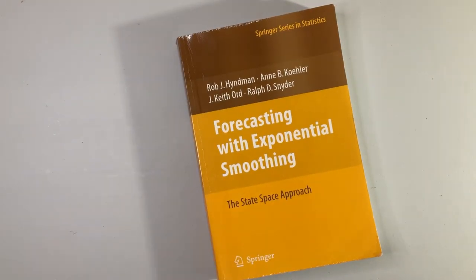Forecasting with Exponential Smoothing is a book focused on a niche topic. I picked up this book because I like Rob Hyndman's other papers and books.